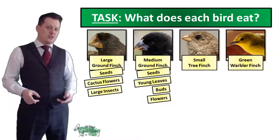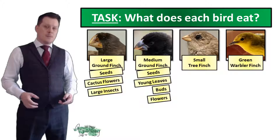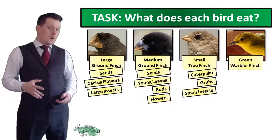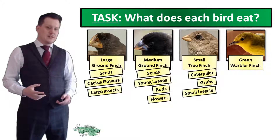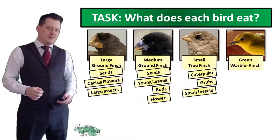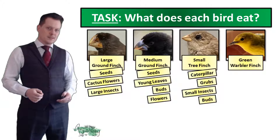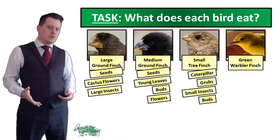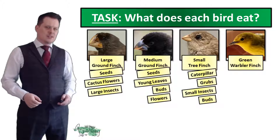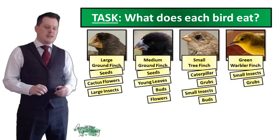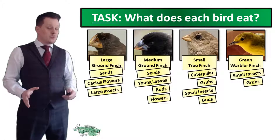The small tree finch has a much smaller, pointier beak, implying it will eat more insects like caterpillars, grubs, and small insects. You can still see some similarities in beak shape between the small tree finch and the ground finches, and it will also eat plant buds. The green warbler finch has the pointiest beak of all, and its diet consists of small insects and grubs only — its beak is not suited for eating any plants, nuts, or seeds.